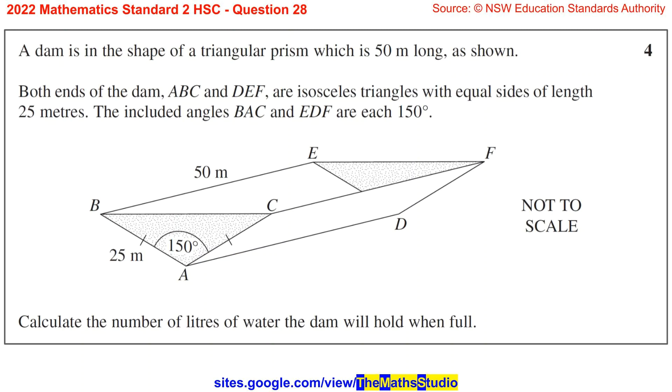Question 28. A dam is in the shape of a triangular prism which is 50 metres long, as shown.